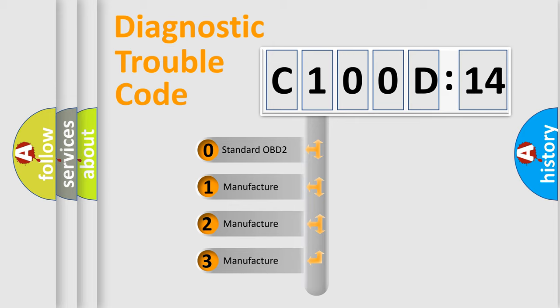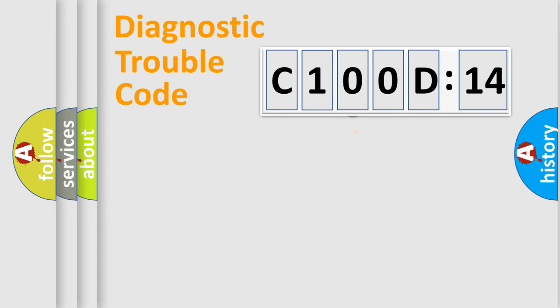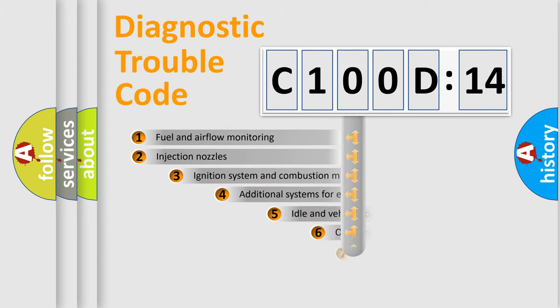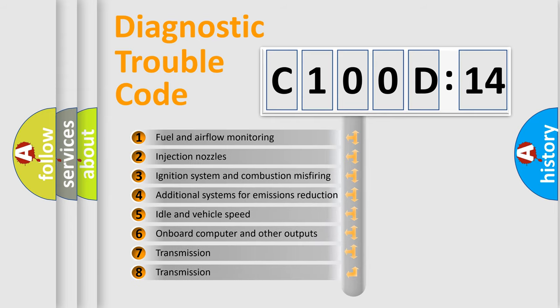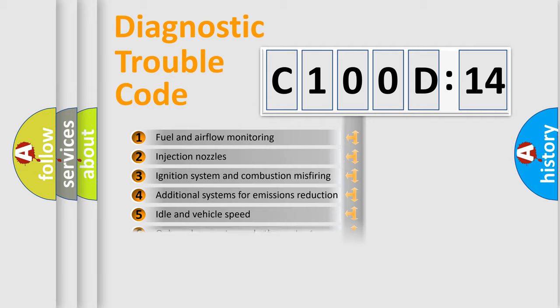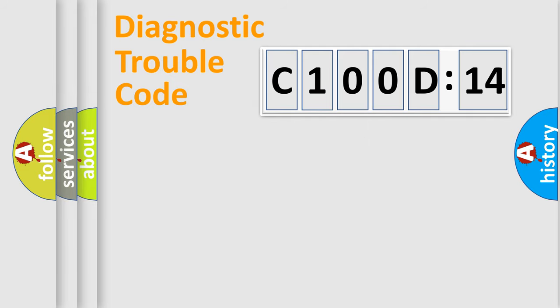If the second character is expressed as zero, it is a standardized error. In the case of numbers 1, 2, or 3, it is a manufacturer-specific error. The third character specifies a subset of errors. The distribution shown is valid only for the standardized DTC code. Only the last two characters define the specific fault of the group.